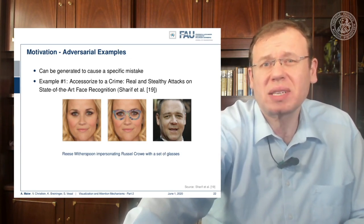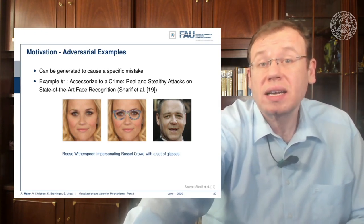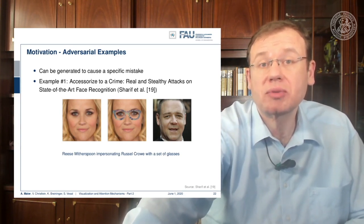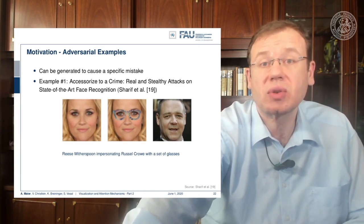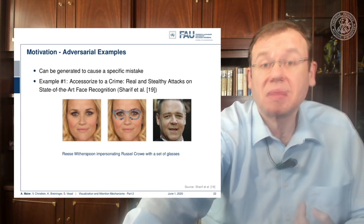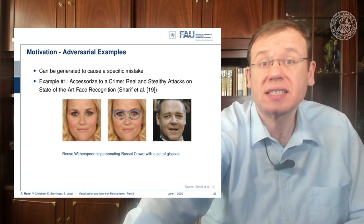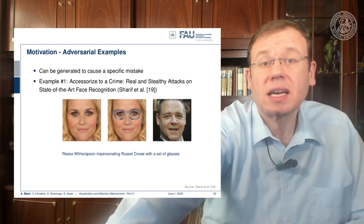With these particular glasses, Reese Witherspoon is now successfully disguised as Russell Crowe. You may say this is complete nonsense — you can still see Reese Witherspoon. Well, yes, because the human perceptual system works differently than a neural network trained for person identification. There are even works that build on top of this: they actually printed these fancy glasses and showed that camera-based person identification systems can be tricked with such strange physical attacks.